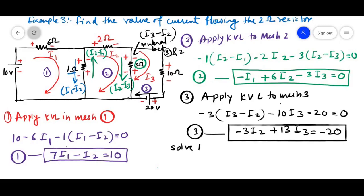Solve equation 1, 2 and 3 by simultaneous equation. You will get I1 equal to 1.34 ampere, I2 equal to minus 0.62 ampere, I3 is minus 1.68 ampere.